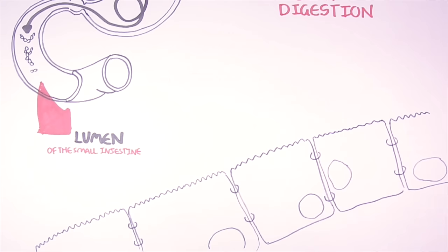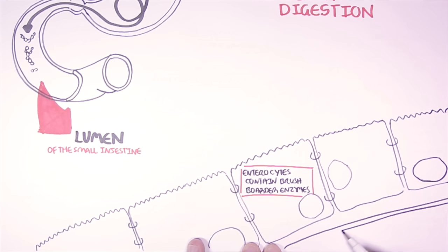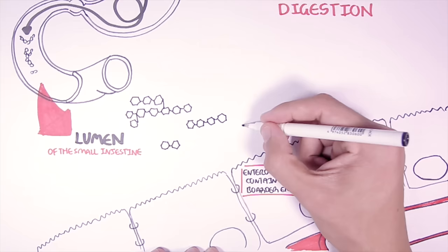But the enterocytes also contain these enzymes called brush border enzymes that play a role in the digestion of starch. Below the enterocytes we have the bloodstream. So when starch reaches the small intestine it is already in a partially hydrolyzed form, remember.